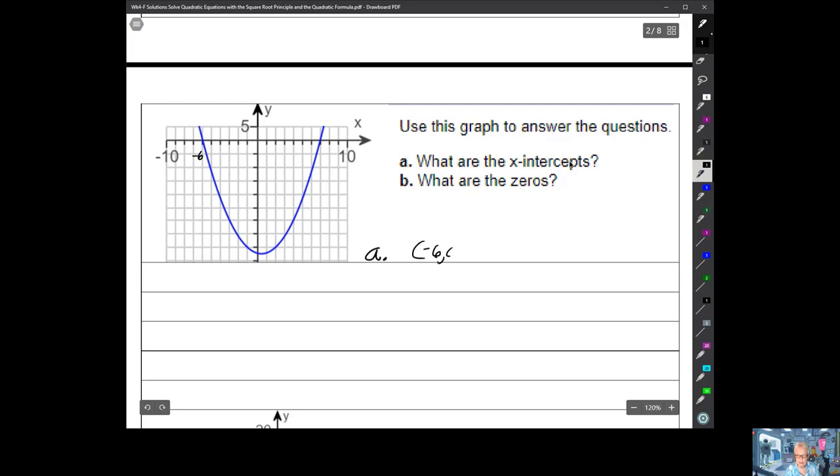So negative 6, comma, 0, and 1, 2, 3, 4, 5, 6, 7. Now you're being asked, what are the zeros? Specifically, what are the zeros of f(x)? Let's write that down. What are the zeros of f(x)?